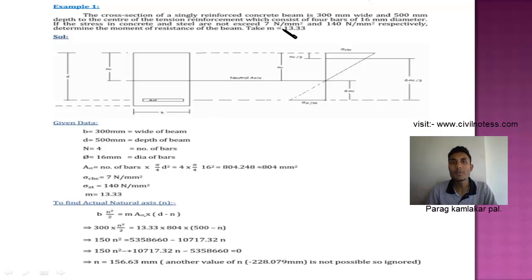Sigma CBC is 7 N per mm square and Sigma ST is 140 N per mm square is given and modular ratio is given. Based upon this diagrammatic representation, this is the depth of the neutral axis NC. This is Sigma CBC and this is Sigma C by M. This is D minus NC, the effective depth minus NC.